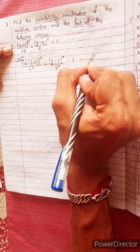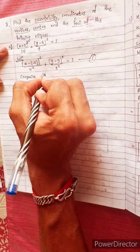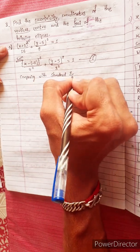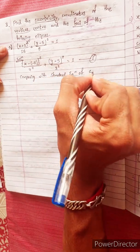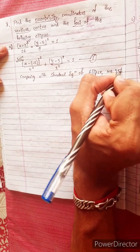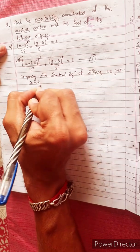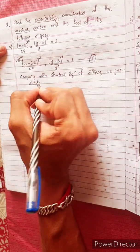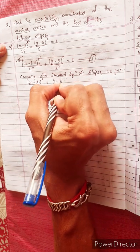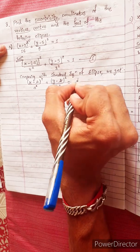This is equation 1. Comparing with the standard equation of ellipse: (x minus h) squared divided by a squared, plus (y minus k) squared divided by b squared, equals to 1.